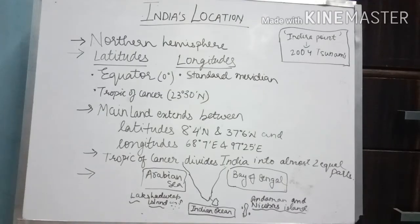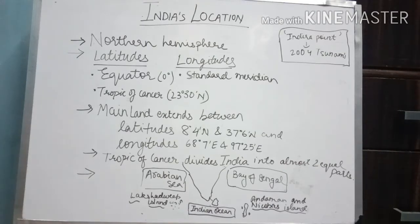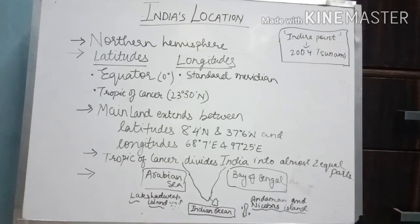First of all, we will look at India's location — where India is located. India is located in the northern hemisphere. As we all know, our earth is divided into two parts: the northern hemisphere and the southern hemisphere. India lies in the northern hemisphere.